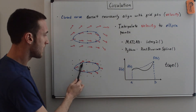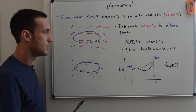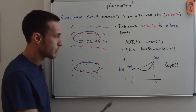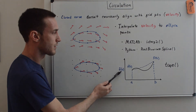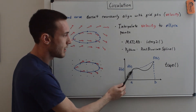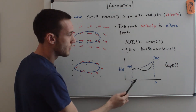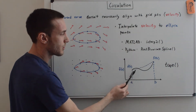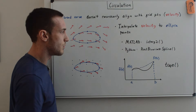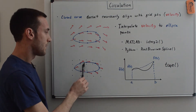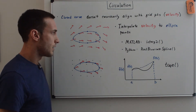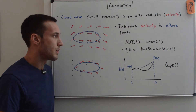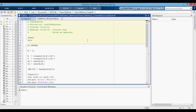Since velocities are defined at discrete points, we use trapezoidal integration. This approximates the area under a function between two endpoints as a trapezoid — the same approach applied along the ellipse contour. In MATLAB and Python, the trapz function is used to perform this integration.